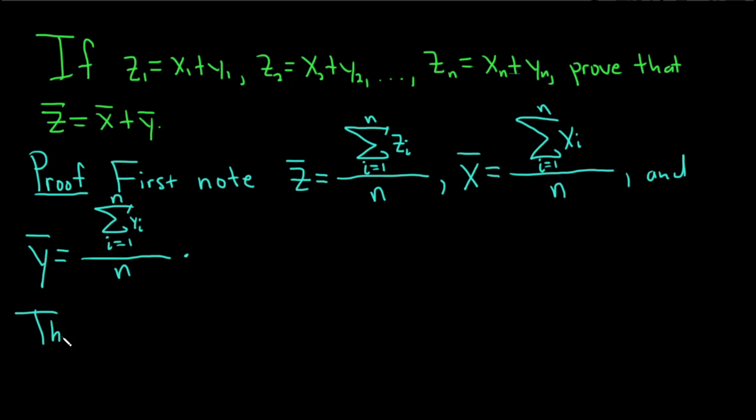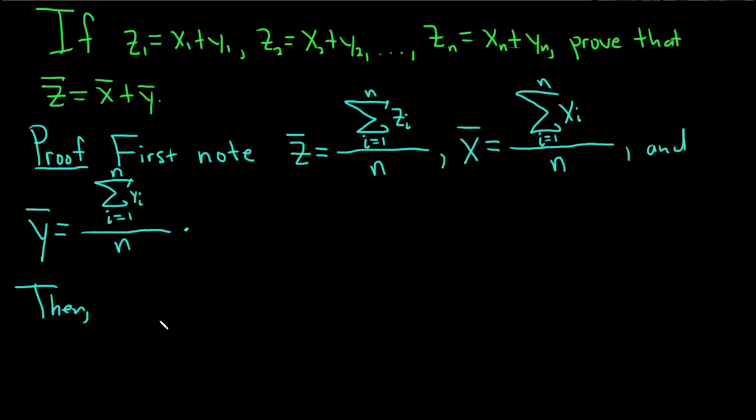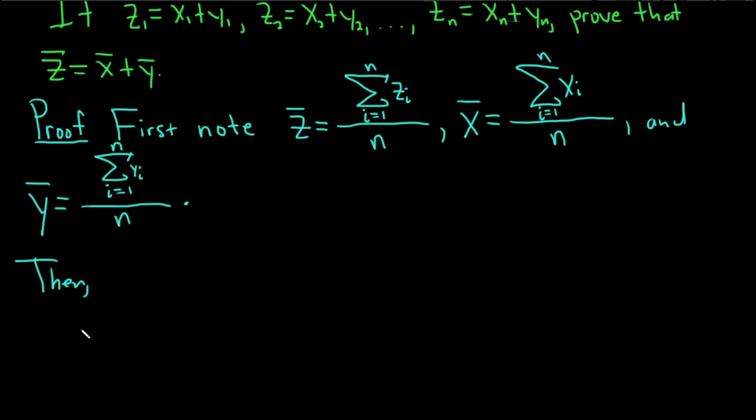So then, let's go ahead and write down Z-bar, which we know what it is already. So Z-bar is the arithmetic mean of the Zs. So here's our fraction, and here are the Zs. So we have Z sub i, i goes from 1 to n, and then we're dividing by n. So now let's use the definition of the Zs.